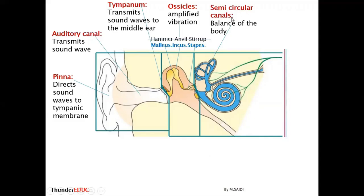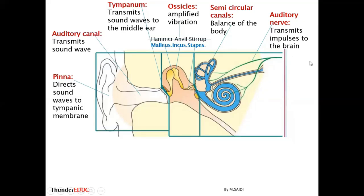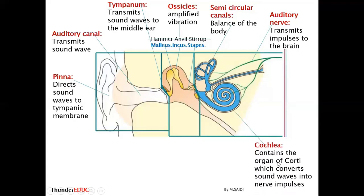The semicircular canals have sensory receptors for balance — the cristae and maculae. The nerves are very important in transmitting impulses to the brain: some come from the semicircular canals for balance, some from the cochlea for hearing. Both are transmitted to the brain but go to different parts — hearing is controlled by the cerebrum, while balance is controlled by a different part of the cerebrum.